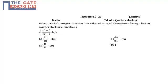The options are: Option A is 2π/81 - 4πi, Option B is π/8 - 6πi, Option C is 4π/81 - 6πi, and Option D is 1.